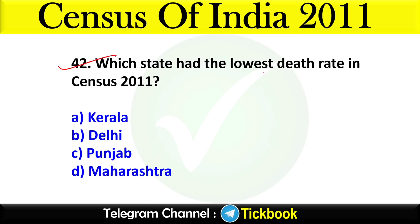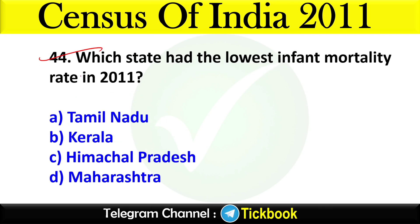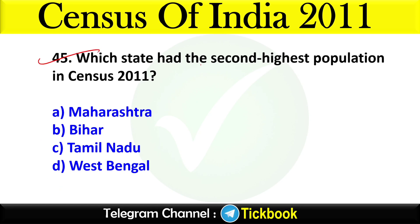Question forty-two: Which state had the lowest death rate in Census 2011? Option number A: Kerala. Question forty-three: Which state had the highest infant mortality rate in Census 2011? Option number B is the right answer: Madhya Pradesh. Question forty-four: Which state had the lowest infant mortality rate in India's Census 2011? Option number B is the right answer: Kerala.